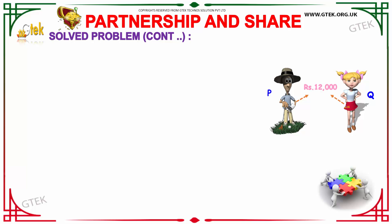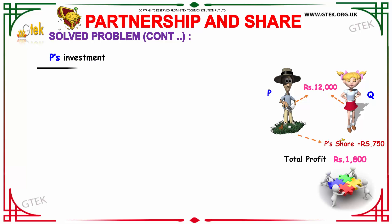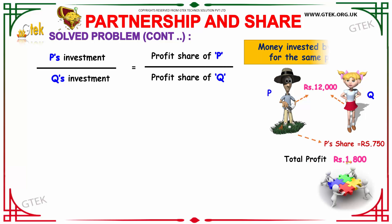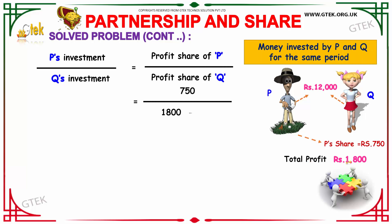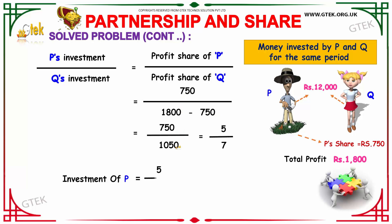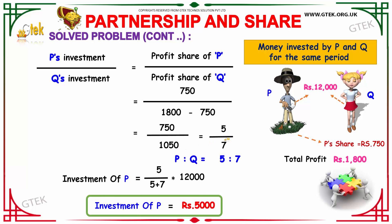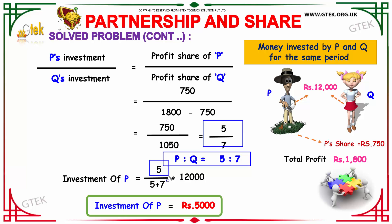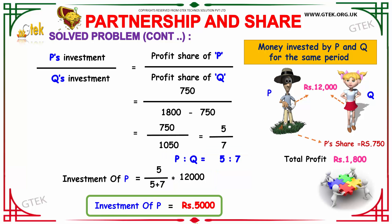P and Q invested Rs. 12,000 together. P's share was Rs. 750 and total profit is Rs. 1800. So 750 divided by (1800 minus 750) equals 750 divided by 1050, which simplifies to 5 divided by 7. The ratio of P to Q is 5:7. So P's investment is 5 divided by (5 plus 7) into Rs. 12,000, which gives Rs. 5,000.